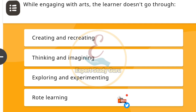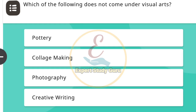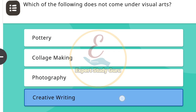While engaging with arts, the learner doesn't go through — the correct answer is rote learning. Next: Which of the following does not come under visual arts? The correct answer is creative writing.